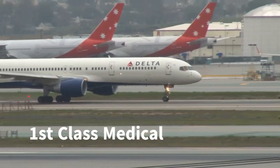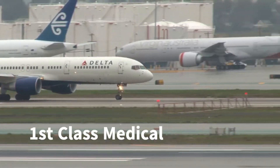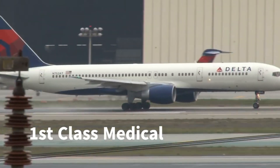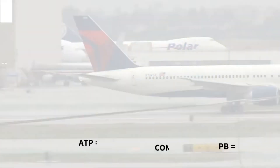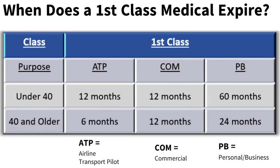FAR 61.23 covers FAA Medical Certificates. A first-class medical is required for pilots who fly large passenger jets as an airline transport pilot. It has the most stringent requirements and expires sooner than lower classes. If under the age of 40, first-class medicals are good for 12 calendar months for ATP or commercial operations and 60 calendar months for personal or business flying. If over 40, they are good for 6 calendar months for ATP operations and 12 months for commercial operations, and 24 calendar months for personal or business flying.